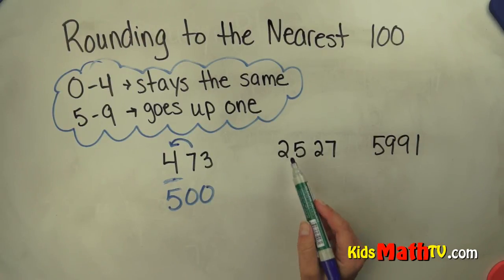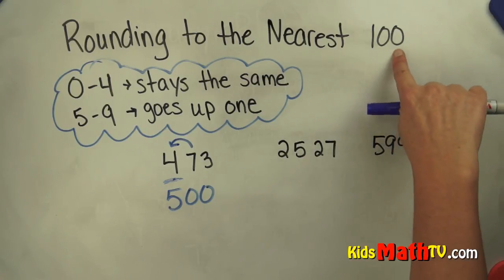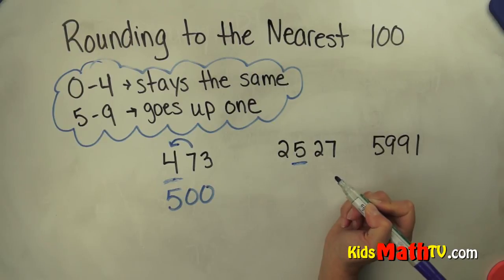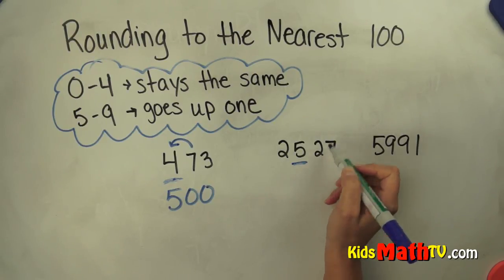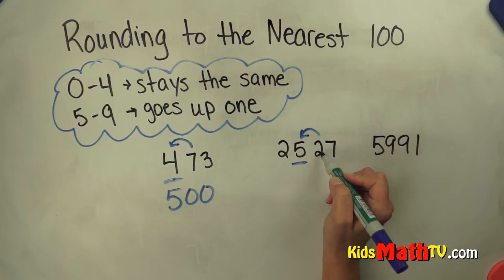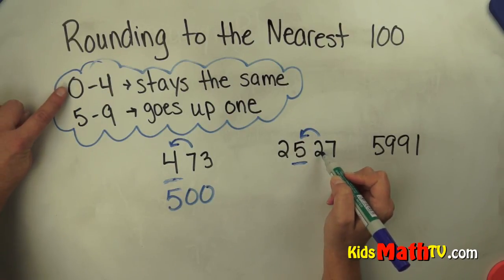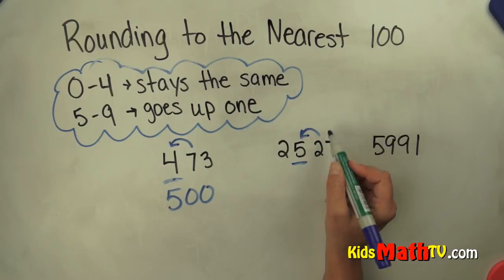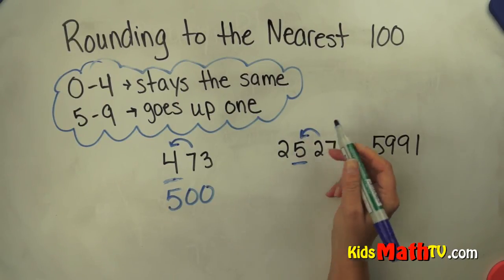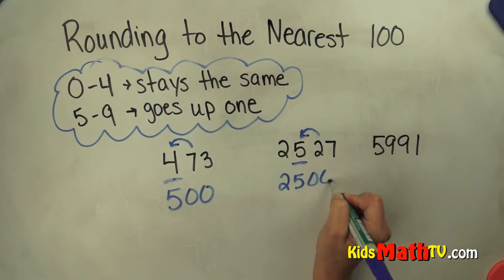Let's do another example. We have two thousand five hundred twenty-seven. We're rounding to the nearest hundred, so I identify the hundreds place, and the number to the right tells that number what to do. This two is between zero and four, so it tells that number to stay the same — this two tells the five to stay the same. So this becomes two thousand five hundred.